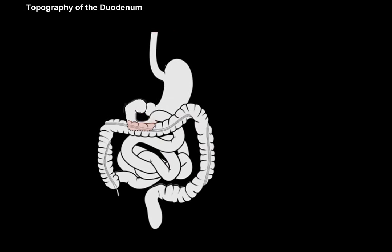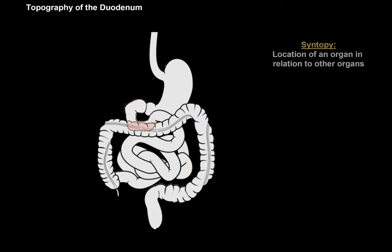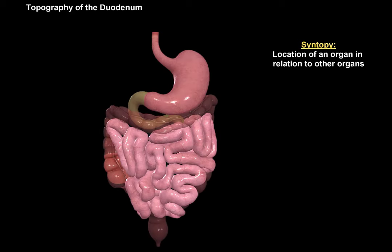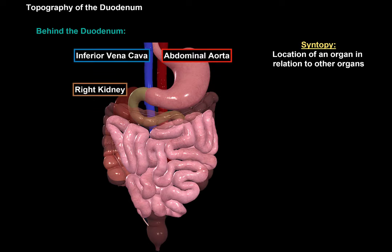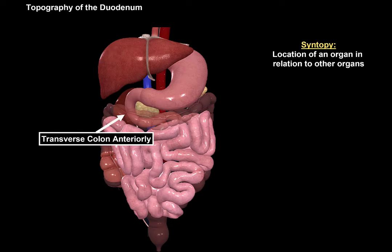Now let's go through the topography of the duodenum, starting with the skeletopy — the location of an organ in relation to various bones. The duodenum goes from the first lumbar vertebra to the third lumbar vertebra. Next we have the syntopy, meaning its relation to other organs. Behind the duodenum you'll find the aorta, the inferior vena cava, and the right kidney. Above the duodenum you'll find the liver, and the duodenum wraps around the pancreas, which is superior to some parts. Anteriorly, you'll find the transverse colon.